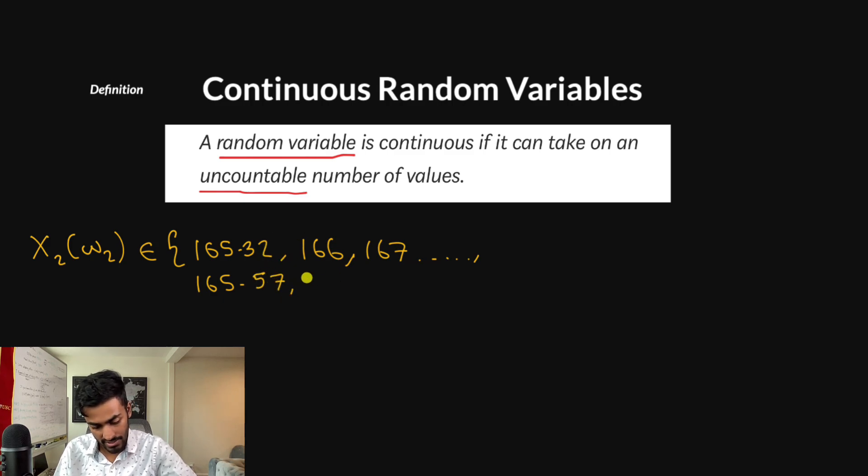But even here, it could have also been a value that lies between 165.57 and 165.58, like 165.573824, whatever it is. Those are all possible values that could be the value of our random variable X₂.